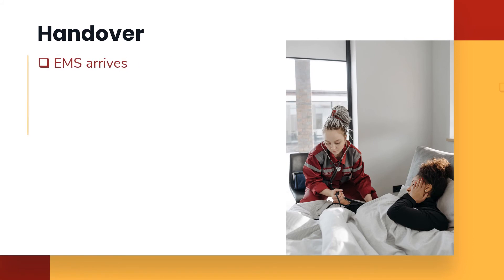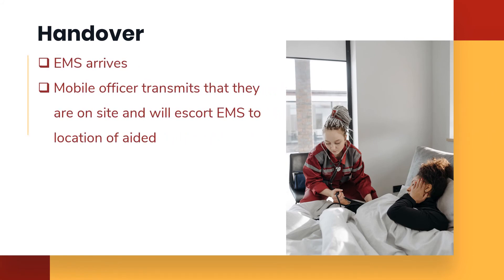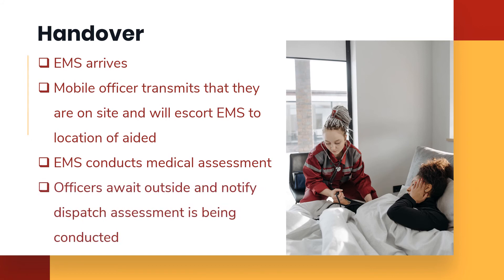Handover: EMS arrives. The mobile officer transmits that they are on site and will escort EMS to the location of the aided. EMS conducts a medical assessment while officers wait outside and notify dispatch that the assessment is being conducted. Teamwork is essential — a mobile officer escorts EMS to the location so the initial responding Post One Officer can remain with the aided. Once EMS is on site, security officers and others clear the area so EMS can conduct their assessment, which may include requests for private medical information.